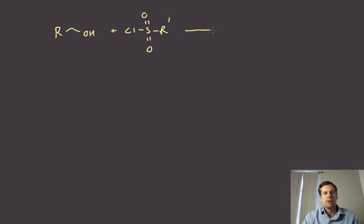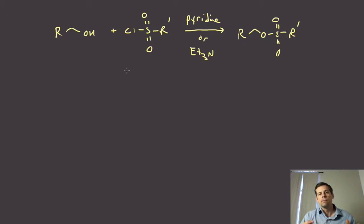If we have a sulfonyl chloride of whatever group, we can react that with the alcohol. This is a very good electrophile, so we usually don't need the alkoxide. We do need some sort of base, and typically we're going to use pyridine or possibly triethylamine. That's an example of utilizing an alcohol in its native form, not as the full alkoxide, to do substitution.